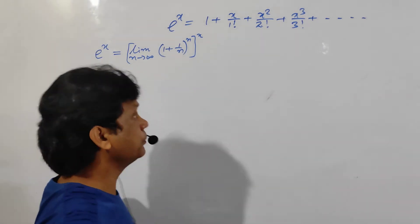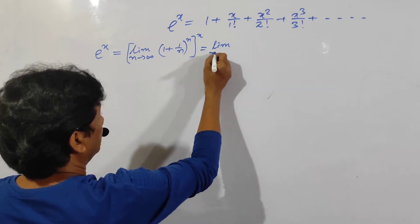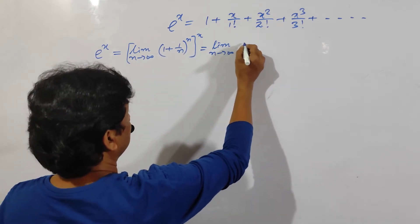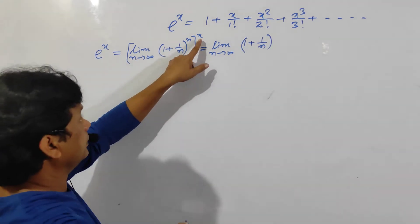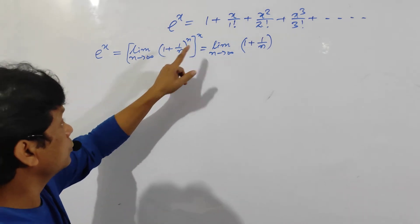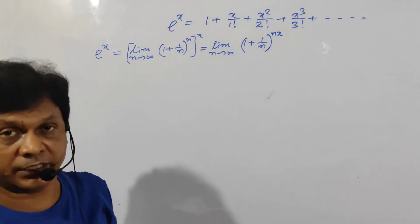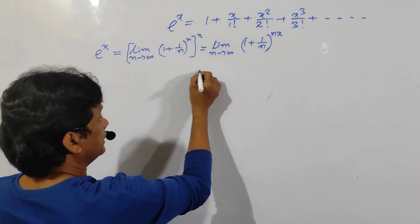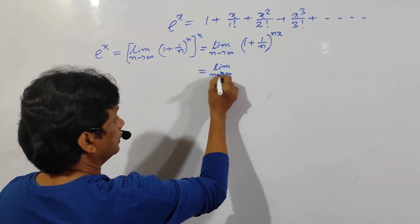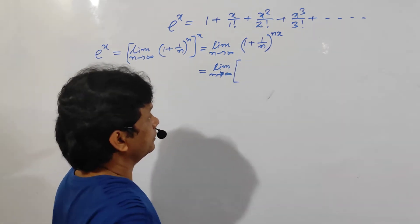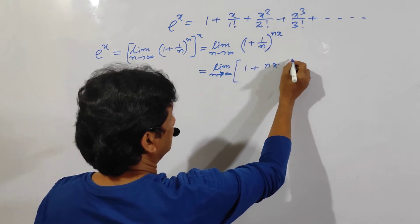How to prove this one? Actually it is very very interesting. Since x is a constant because the variable is n, we can take it to the inside. So I can write 1 plus 1 by n to the power nx. So this quantity — use the Binomial theorem, limit n tends to infinity. I am applying the Binomial theorem: 1 plus nx times 1 by n — that is nc1, written as nx.